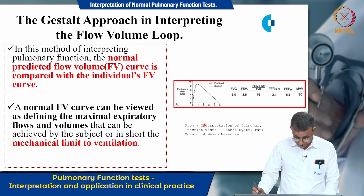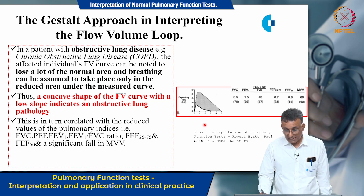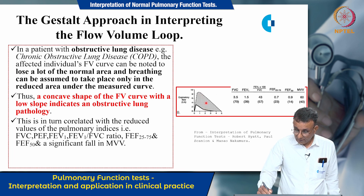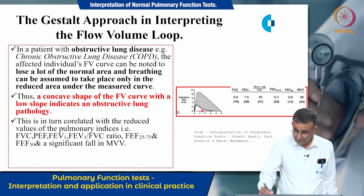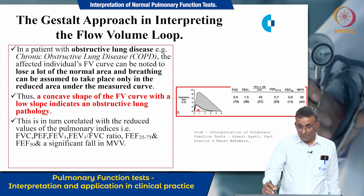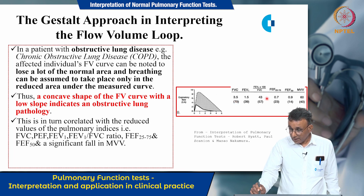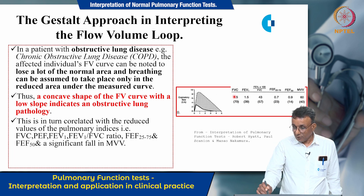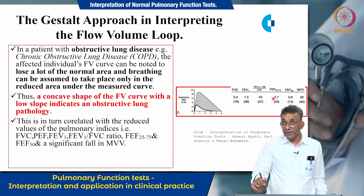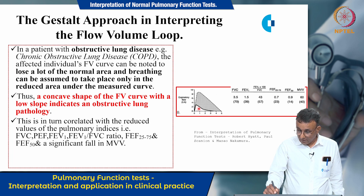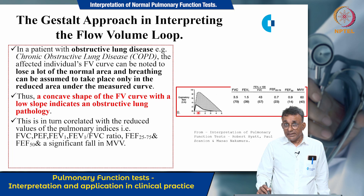Here is a normal flow volume curve alongside the flow volume curve of a person with obstructive lung disease. You can see that so much of the respiratory reserve is compromised in obstructive lung disease. The concave shape of the flow volume curve with a low slope usually indicates obstructive lung disease, and this correlates with a decrease in forced vital capacity, FEV1, FEF flow rates, and maximum voluntary ventilation. Always look at the region below the outline of the curve to assess the mechanical limitation of respiration.